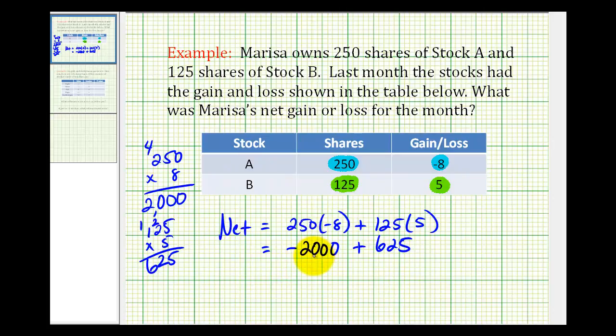So stock A lost two thousand dollars but stock B gained six hundred twenty-five dollars. And since the signs are different and we can see the negative is going to outweigh the positive, we'll have a net loss. To determine the loss we'll take the absolute value of these two and then subtract the small one from the large one.